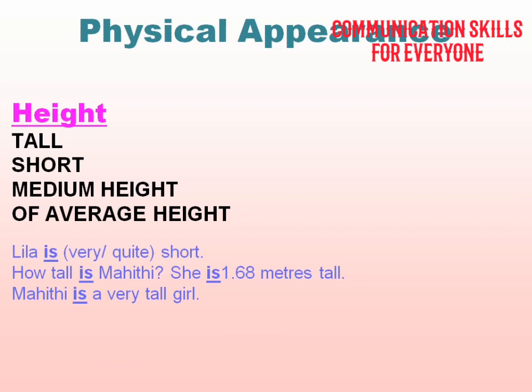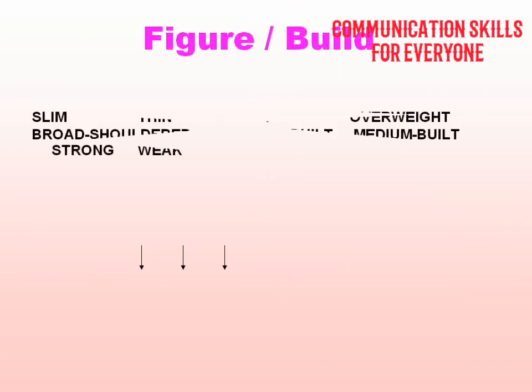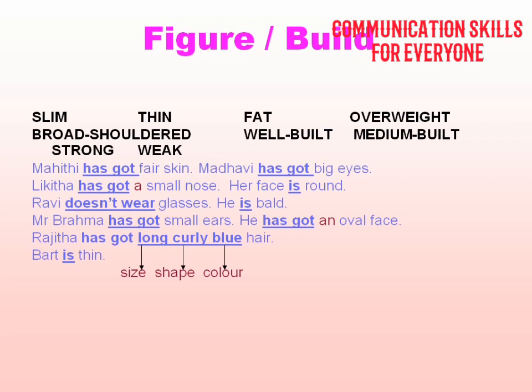Next comes the figure or build. You can describe someone as slim, thin, fat, broad-shouldered, well-built, medium build, or strong. When describing body weight, you must be very conscious about how you phrase it.